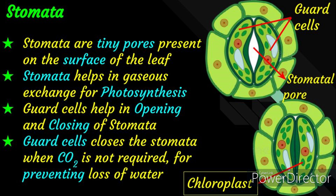Large amounts of water can also be lost through the stomata, so guard cells close the stomata when CO2 is not needed for photosynthesis. During photosynthesis, gaseous exchange occurs through the surface of stems, roots, and leaves, but the largest amount of gaseous exchange takes place in the leaves through the stomata. When water flows into the guard cells, the guard cells swell and open the stomata, allowing CO2 to get into the plant. When water moves out of the guard cells, they shrink and close the stomata.